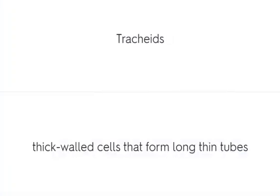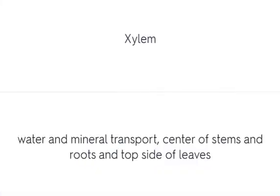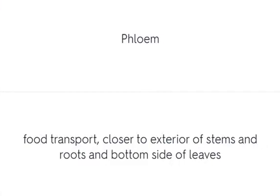Tracheids are thick-walled cells that form long thin tubes. Xylem transports water and minerals and is found at the center of stems and roots and the top side of leaves. Phloem transports food and is closer to the exterior of stems and roots and the bottom side of leaves.